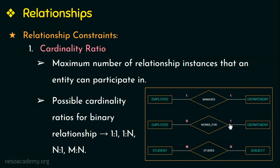The next example is 'student studies subject.' Here one student can study any number of subjects, and one subject can be studied by any number of students. So this is an M-to-N or many-to-many relationship. Cardinality ratio is the maximum number of relationship instances that an entity can participate in.